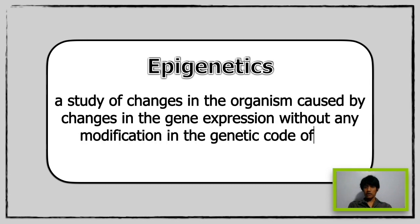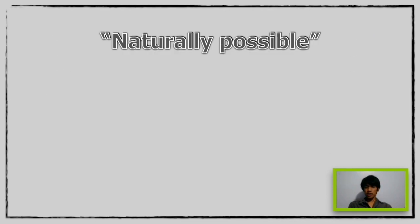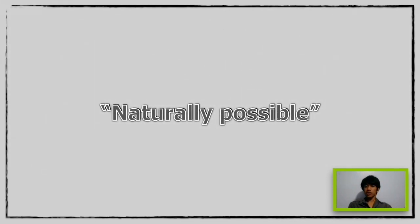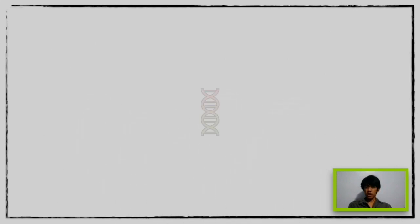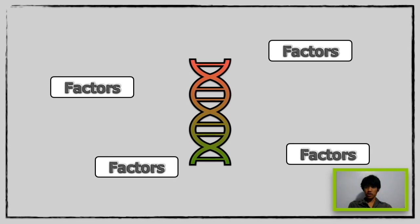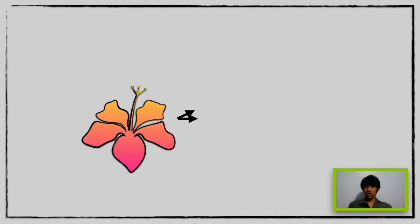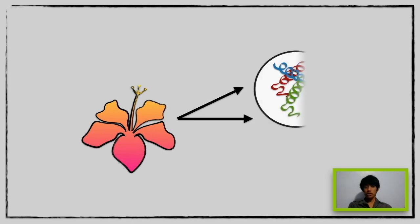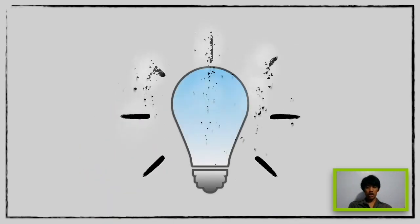The answer is epigenetics is a study of changes in the organism caused by changes in the gene expression without any modification in the genetic code of the organisms. This opens the understanding that it is naturally possible for organisms to exhibit differences with each other. Such changes are brought about by factors which trigger the organism's genetic makeup to act accordingly to what the situation dictates. This is possible because of the proteins present in the DNA that are responsible for turning on and off functions that allow unique characteristics in some organisms.